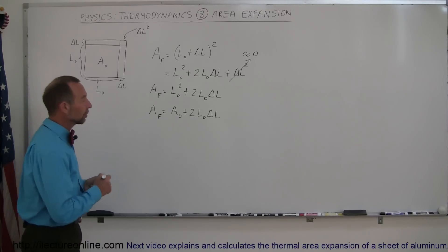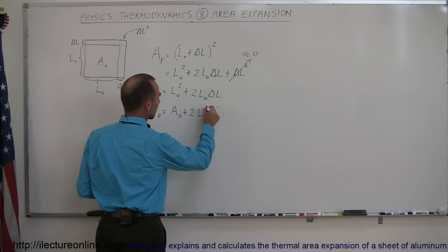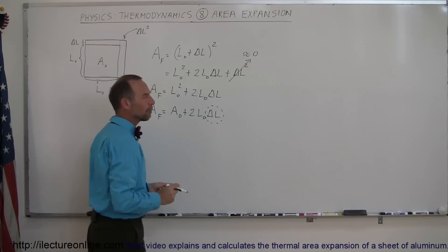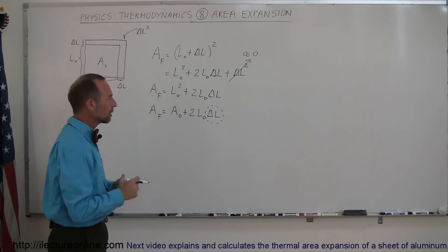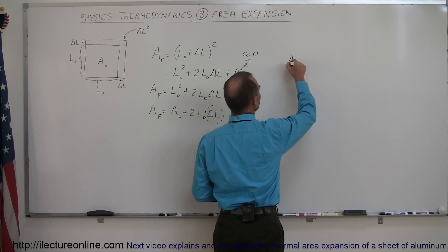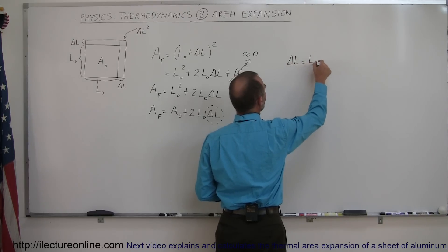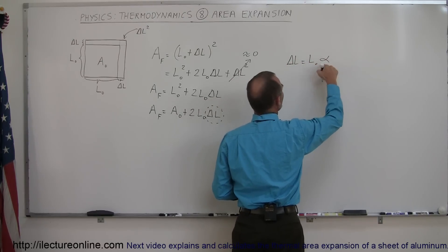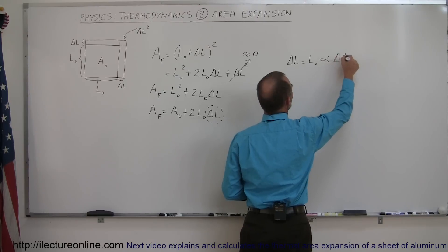Now, next, what we need to do is look at this delta L right here. So what is delta L equal to? If we go back to our linear expansion due to the increase in heat, we can then say that delta L is equal to the original L times the coefficient of linear expansion times the change in the temperature.